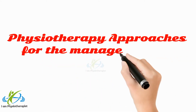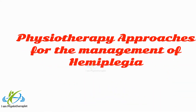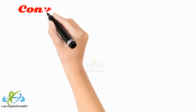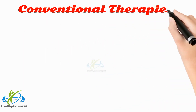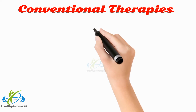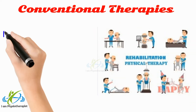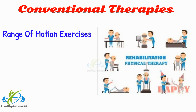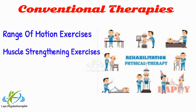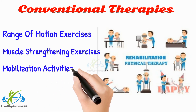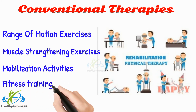Physiotherapy approaches for the management of hemiplegia. Number 1: Conventional therapies. This includes therapeutic exercises, traditional functional retraining such as range of motion exercises, muscle strengthening exercises, mobilization activities, fitness training, and compensatory techniques.